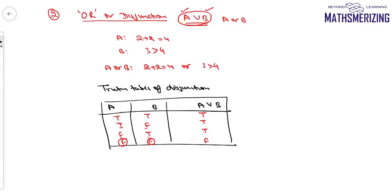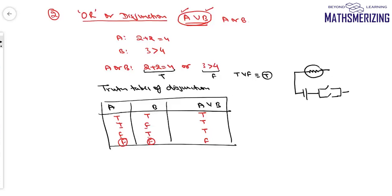'2 plus 2 equals 4' is true and '3 is greater than 4' is false, so true OR false is simply true — at least one of them is true. We can also understand disjunction through a logical circuit: a light bulb connected to a battery with two switches A and B in parallel. The bulb glows when either A is closed, or B is closed, or both are closed. The only case where the bulb won't glow is when both switches are open.